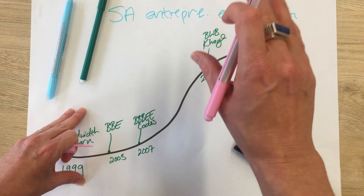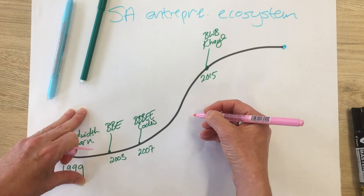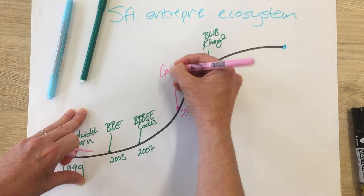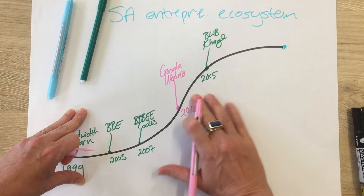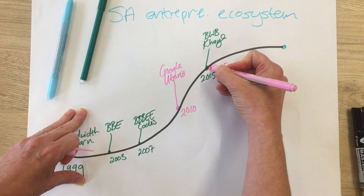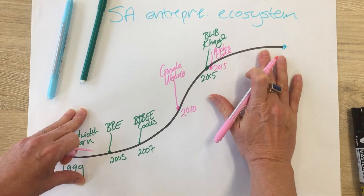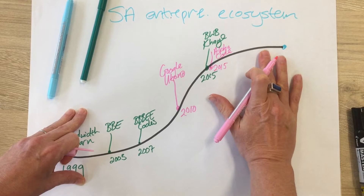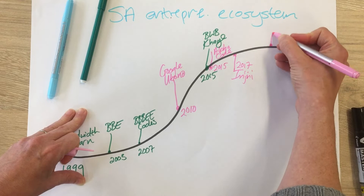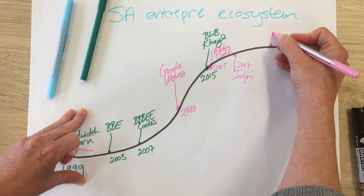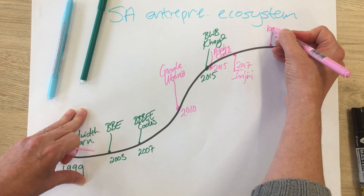Starting to think about accelerators, the first South African one I can think of was Google Ubono in 2010. Then, as we come up to today, there are a bunch more from the past few years: FinTech-focused Alpha Code, which was also 2015; FinTech-focused InGenie, launched in 2017; and quite recently in 2019, biotech-focused OneBio. So quite a lot of activity lately.